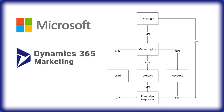We also have Campaign Response, which has a one-to-N relation between Lead, Contact, and Account — meaning one lead can have multiple responses for a campaign. And Campaign to Campaign Response is also marked as a one-to-N relation, meaning one campaign may have N number of campaign responses. This is the life cycle of the marketing module in Dynamics 365.